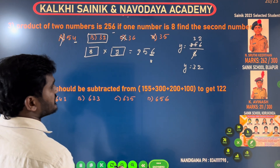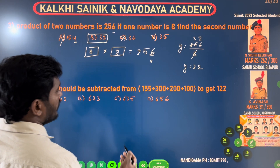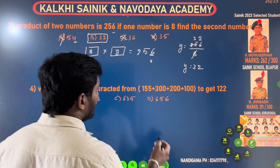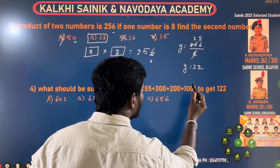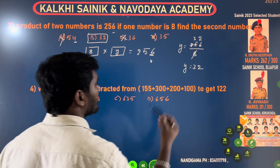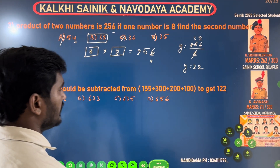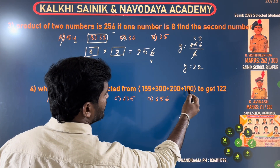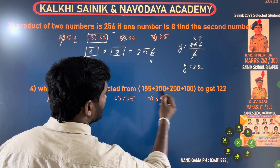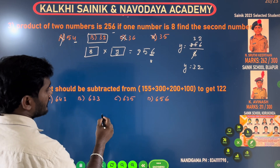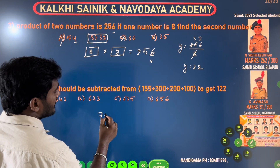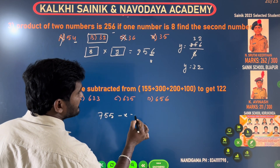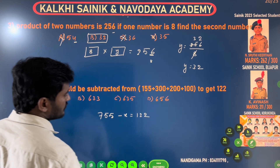What should be subtracted from 155, 300, 200 plus 100? That means this number will be 122. So: 300, 200, 500, 600, 755. That means this number will be 122.